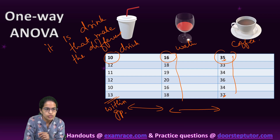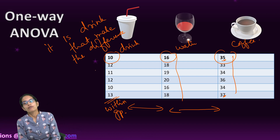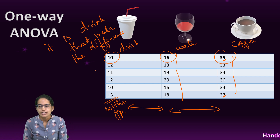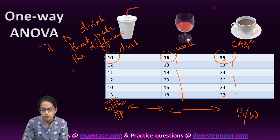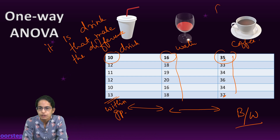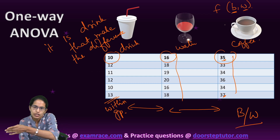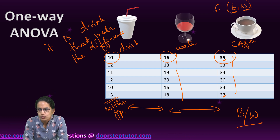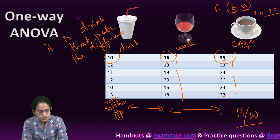So in the first case it was the people who made the difference; in this case it is the drink. When we talk about ANOVA or the F-test, we understand it as a ratio between the between-group variance and the within-group variance. To calculate this, we need the degrees of freedom: between-group degrees of freedom is the total number of groups minus one, and within-group degrees of freedom is the total observations minus the total number of groups.